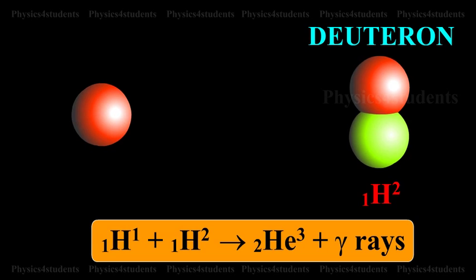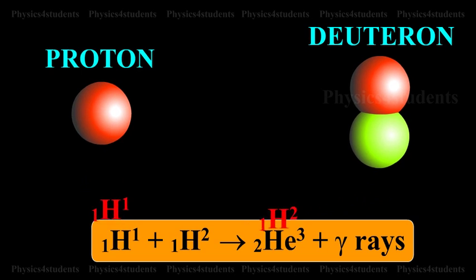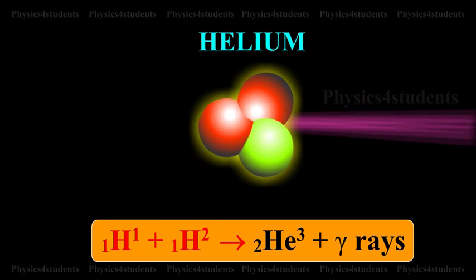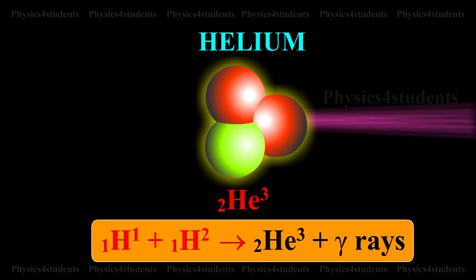The deuteron combines with another proton producing helium, that is 2-HE3 and releasing gamma rays.